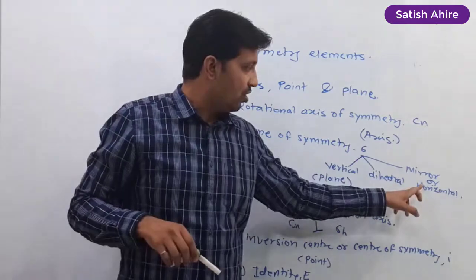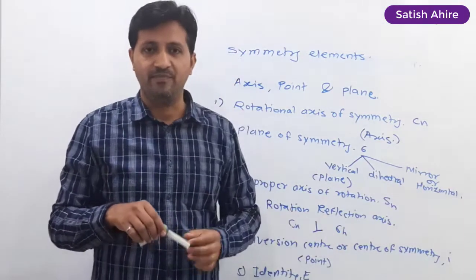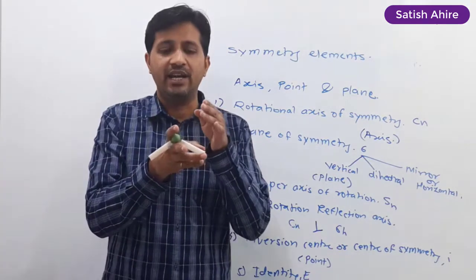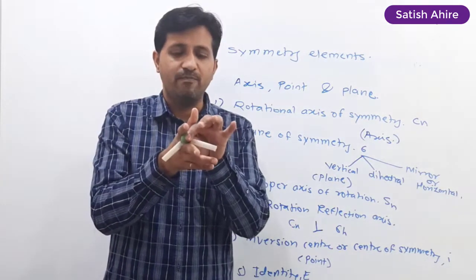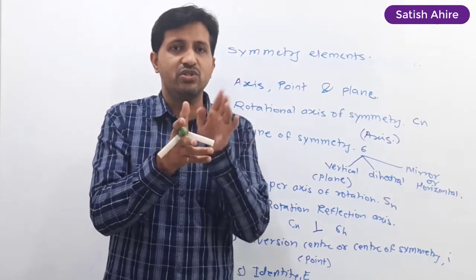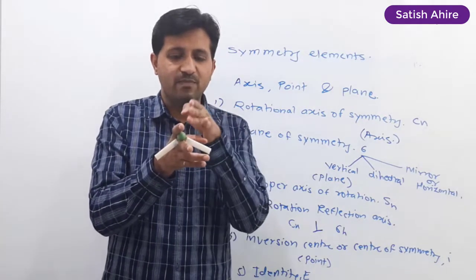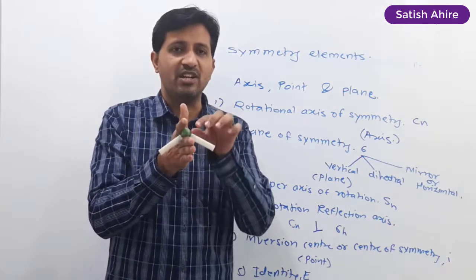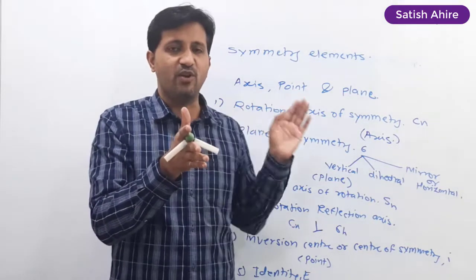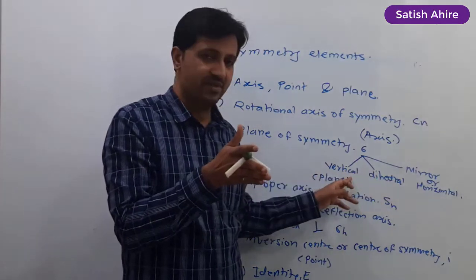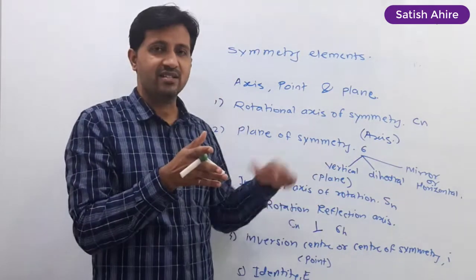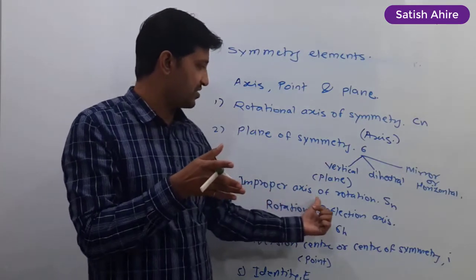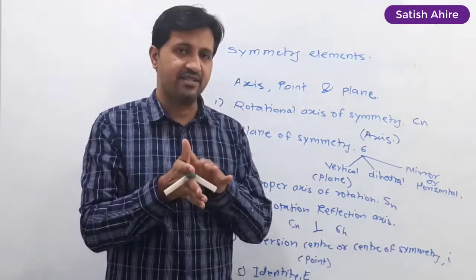The next point is the plane of symmetry, which may be vertical, diagonal, mirror, or horizontal. If we consider this water molecule and pass an imaginary plane in between the two hydrogen atoms such that the plane includes the oxygen atom, then that imaginary plane is known as the plane of symmetry. It is of three types — we will learn in detail in the next lecture.